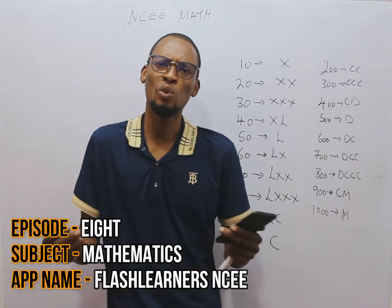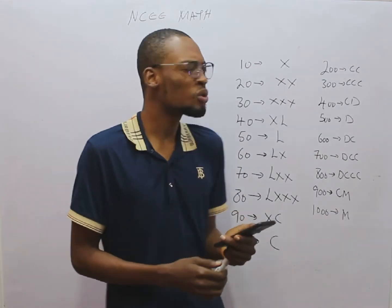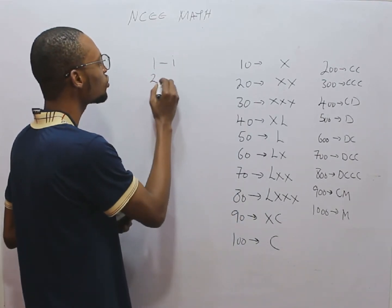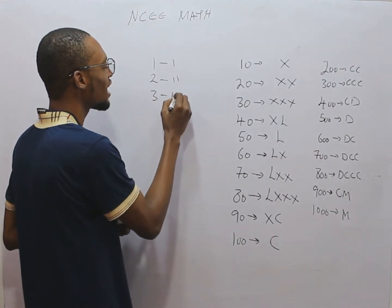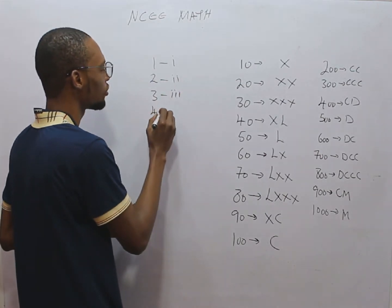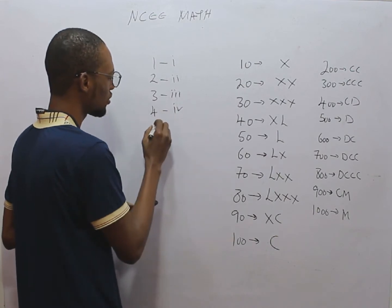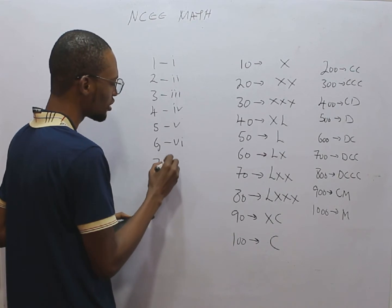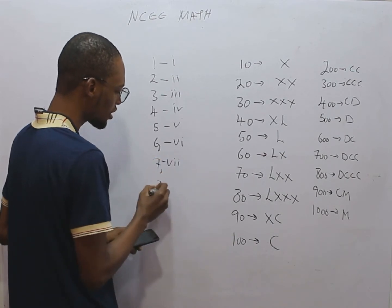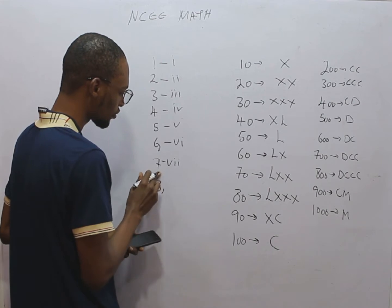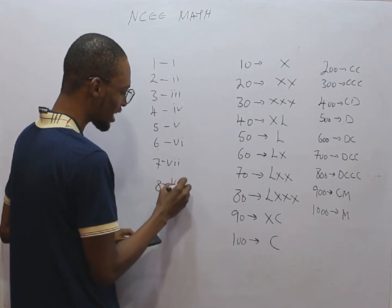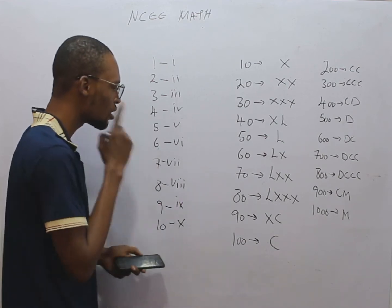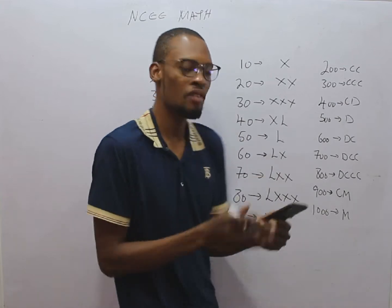When it comes to Roman figures, what you simply need is to know Roman figures one to ten. One is I, two is II, three is III, four is IV, five is V, six is VI, seven is VII, eight is VIII, nine is IX, and ten is X.